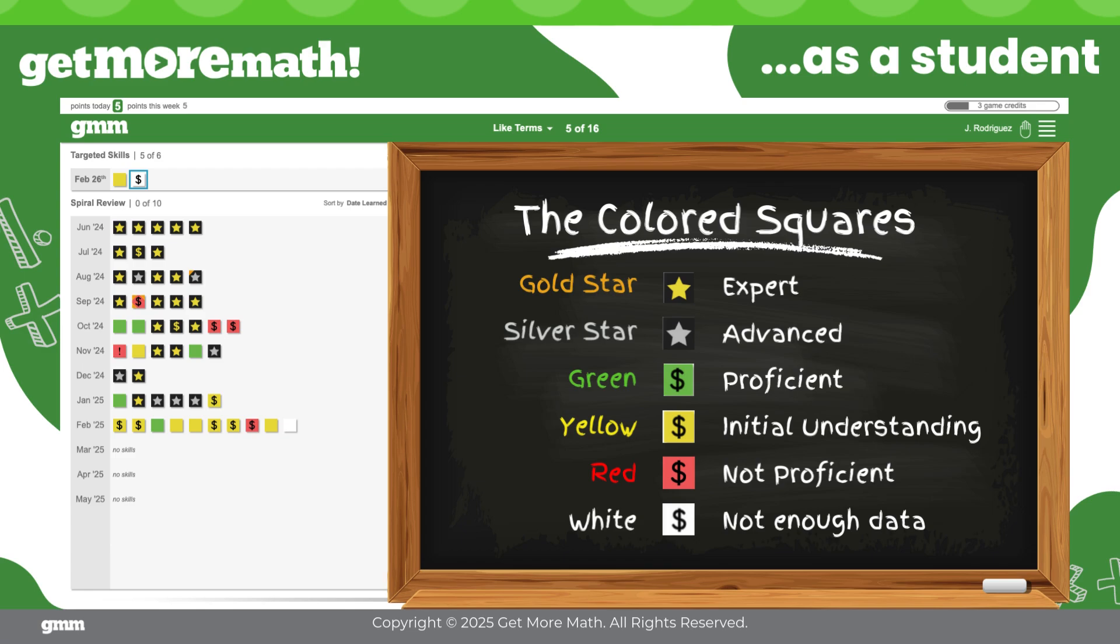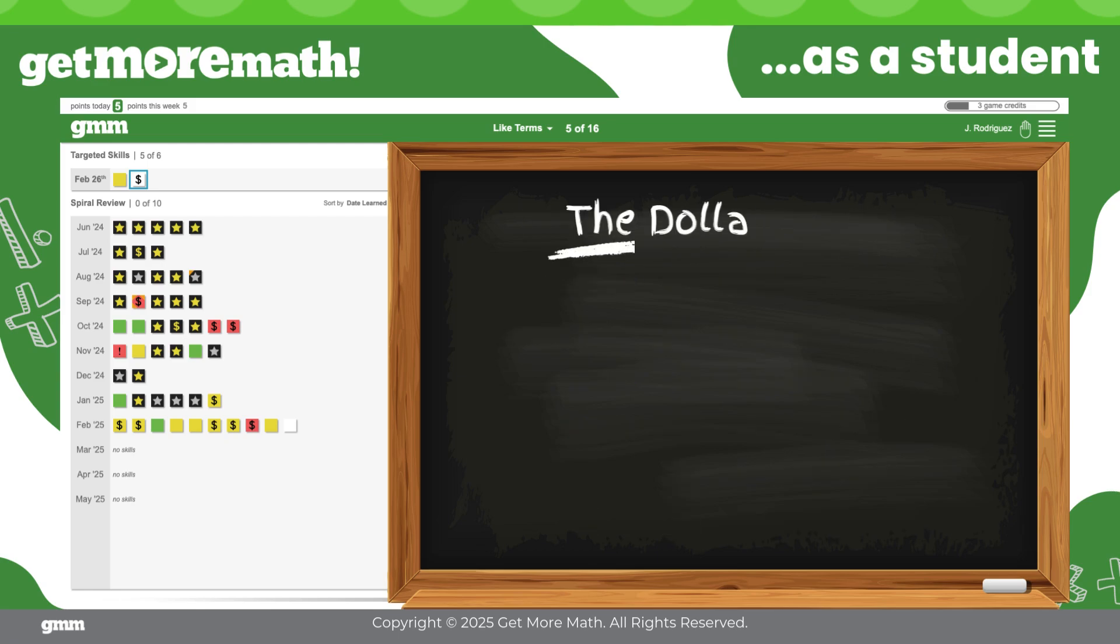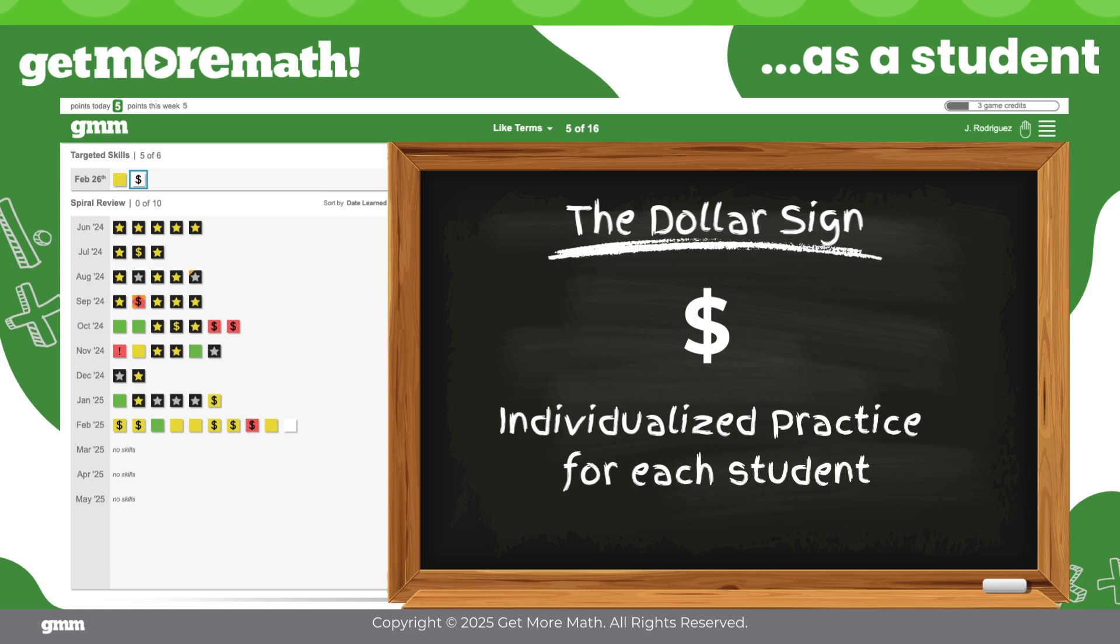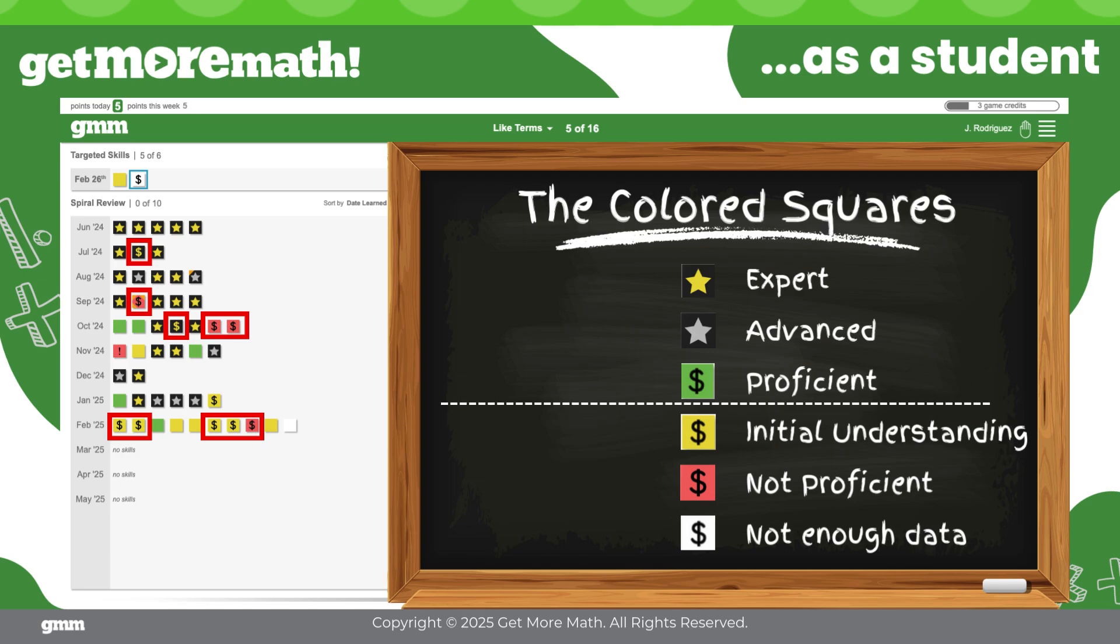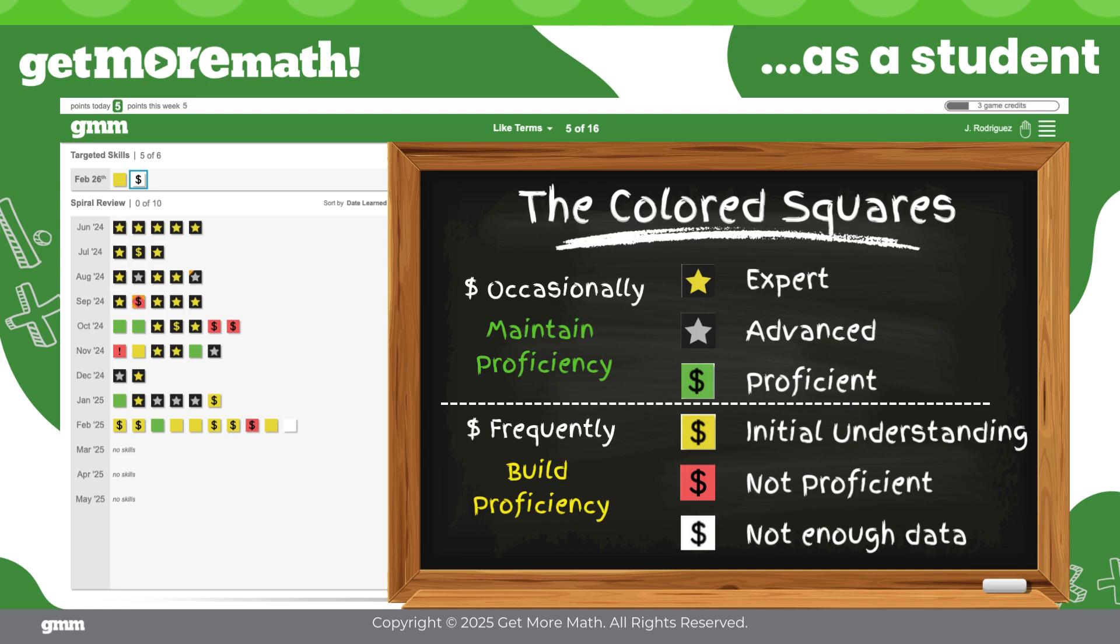To keep the focus on what matters most, Get More Math places a dollar sign on the skills deemed most necessary for practice. The selection of skills and corresponding dollar signs are unique for each student. Skills that are fairly new or consistently weak will be included frequently in a student's spiral review to build proficiency. But that alone is not enough. To maintain the proficiency of their stronger and older skills, those problems will be included in their spiral review occasionally. Teachers can feel confident knowing that every time their students experience practice in spiral review, they are viewing a customized selection of skills designed specifically to support their needs.